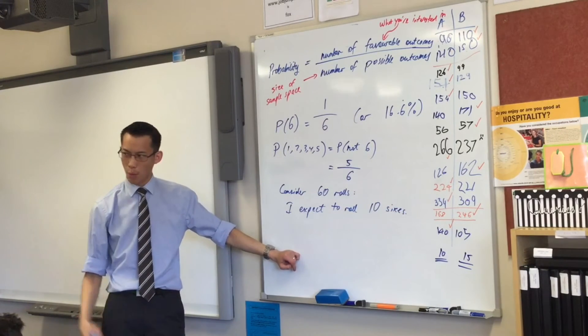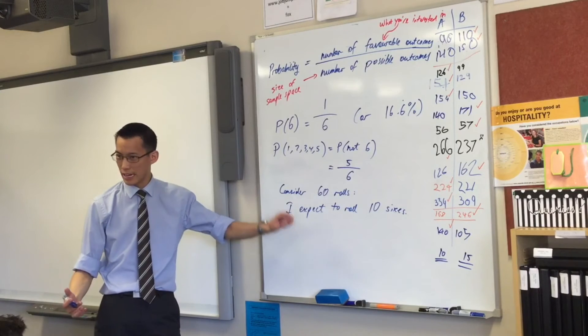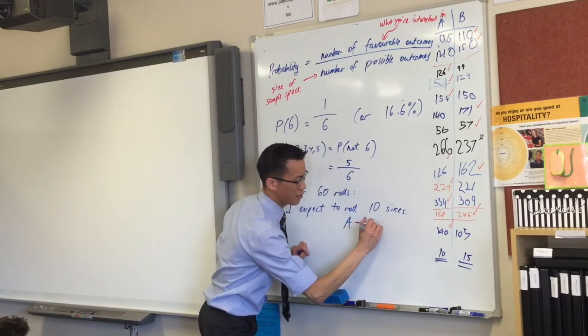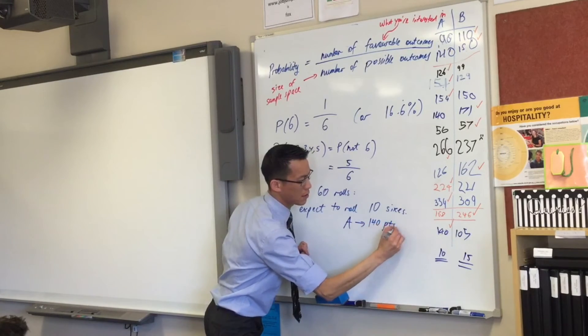So, how many points will player A score in this game, Frank? 140. Okay, very good. A will get 140 points.